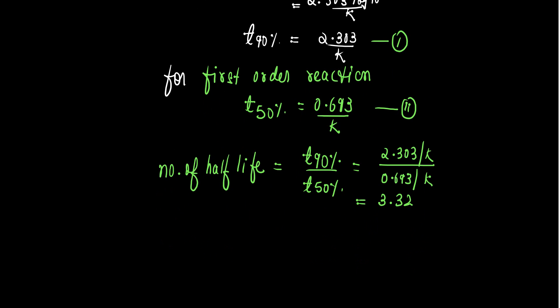Therefore, 3.32 half-lives will be required for 90% completion of a first order reaction. This will be our answer.